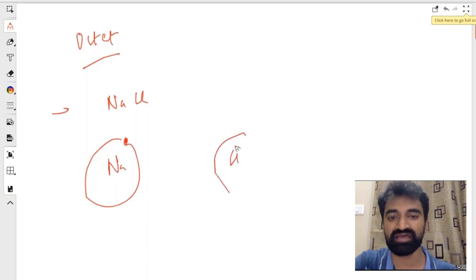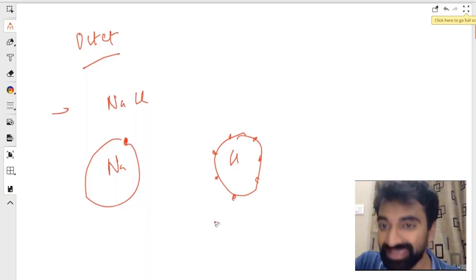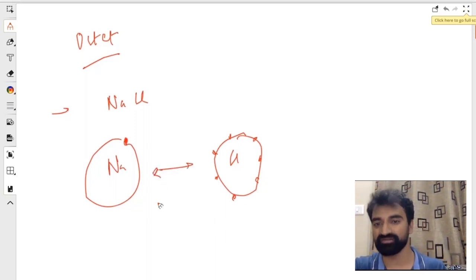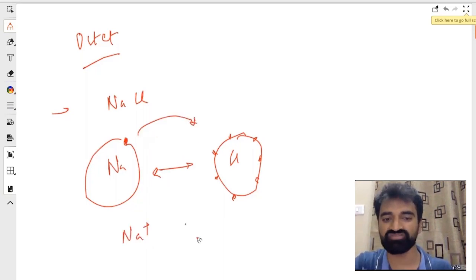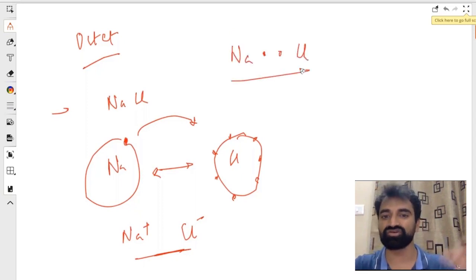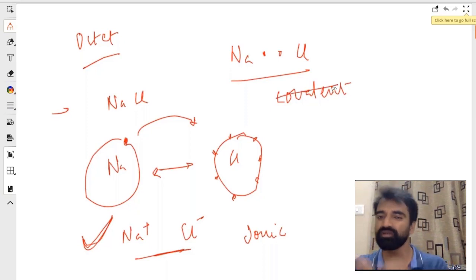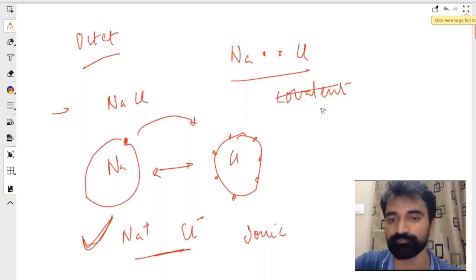Either one electron from Na can go here, so I will have Na+ and Cl-, and then they get together because of the electronic force. Or Na and Cl can share one electron and they get together by mutual sharing. These are two types of bonds: ionic and covalent. We know that in NaCl, ionic bond exists; covalent actually doesn't exist, but covalent exists in other forms, for example in H2O.